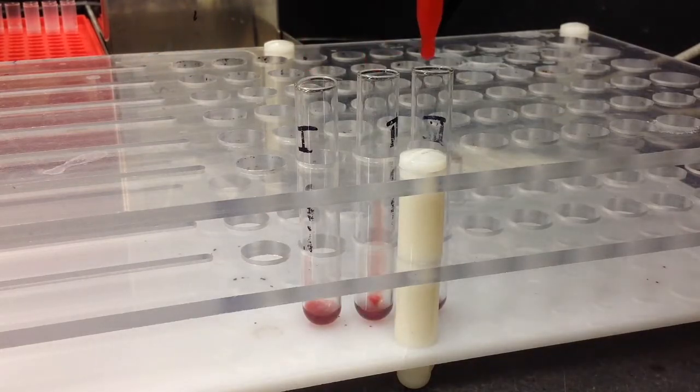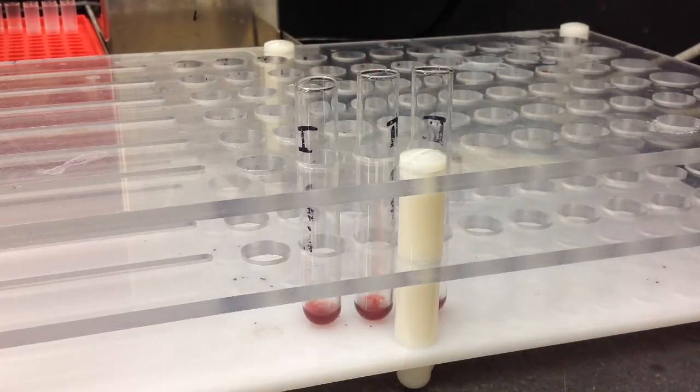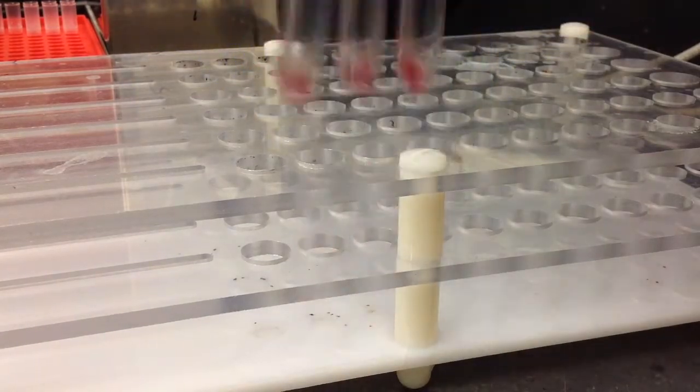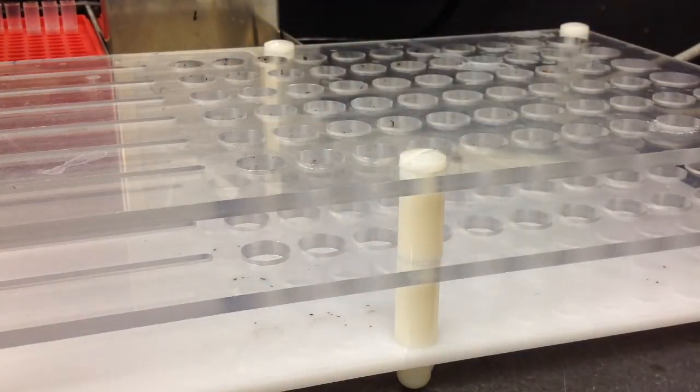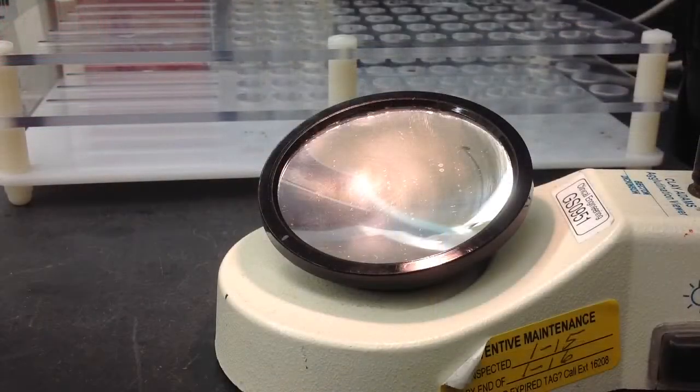And it's just one drop of check cell to each one of the tubes. And then once again, you're going to go ahead and mix it and then centrifuge it for 20 seconds or whatever your facility uses.